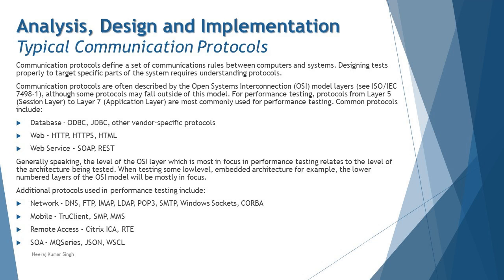For further classification: from a network point of view, we have DNS, FTP, IMAP, LDAP, POP3, SMTP, Windows Socket, and CORBA. From a mobile point of view, we have True Client, SMP, and MMS — which are generally needed for mobile application performance testing. For remote access, we have Citrix ICCA and RTE, which support remote testing on RDP-type concepts.